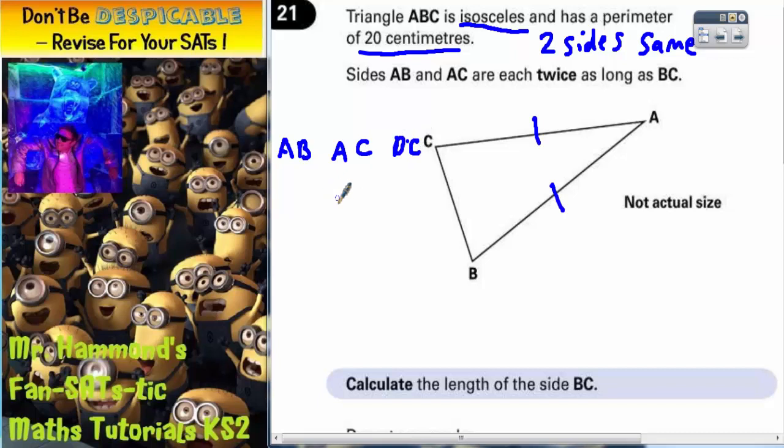Now let's just try sticking a number in. If we say that AB is 10, then that means AC has also got to be 10. So what would BC be to get it up to 20? Well actually those two sides together already make 20. So BC would have to be 0 and that doesn't make sense because you can't have a side that's got 0. So 10 is obviously too big.